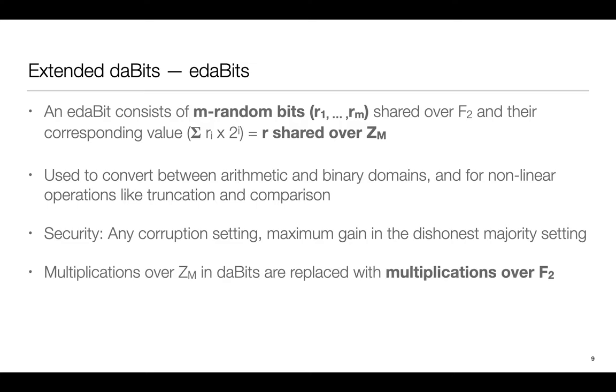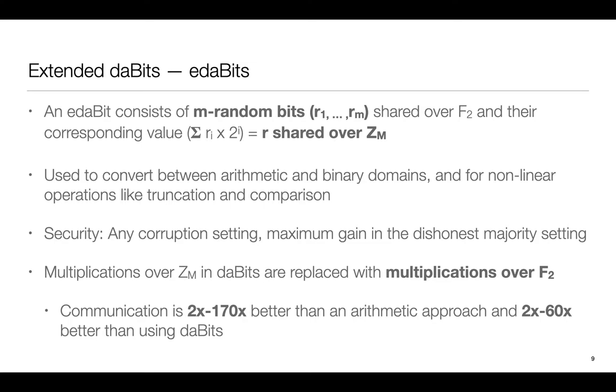We also propose an efficient way to create EDABITS. The key difference between generation of DABITS and EDABITS is that we replace the multiplications of ZM in DABIT generation with multiplications over F2 for EDABITS. As a result communication is between 2 and 170 times better than when using a purely arithmetic approach and between 2 and 60 times better than using DABITS.